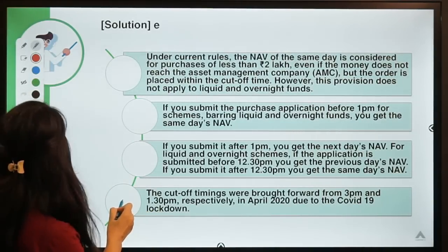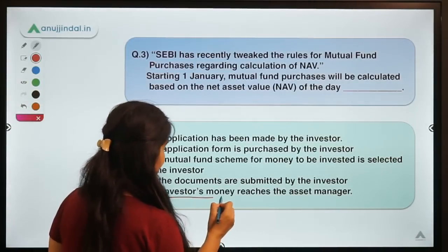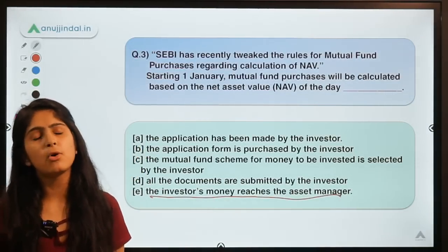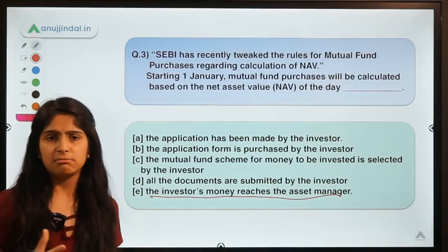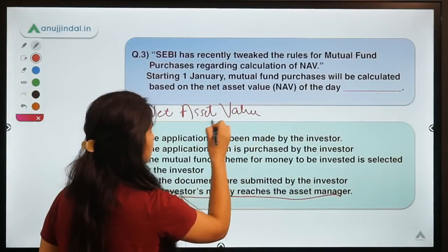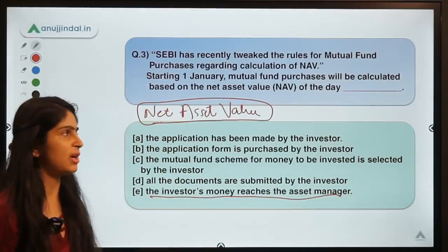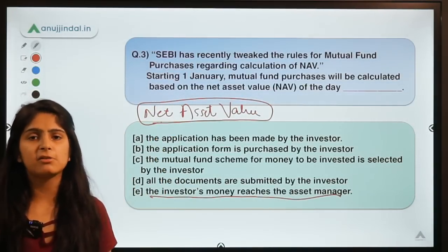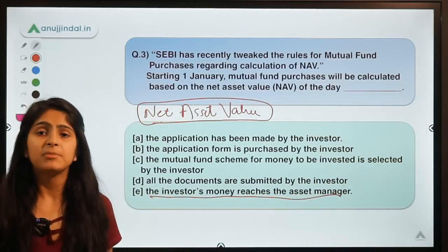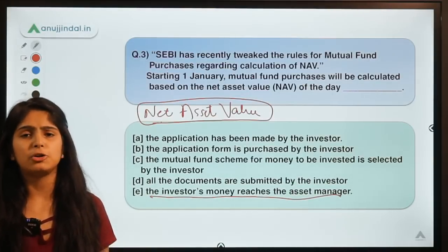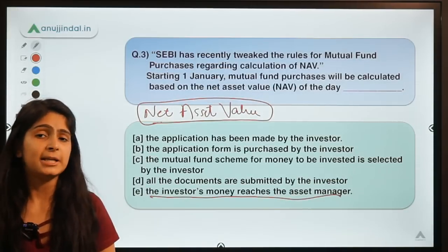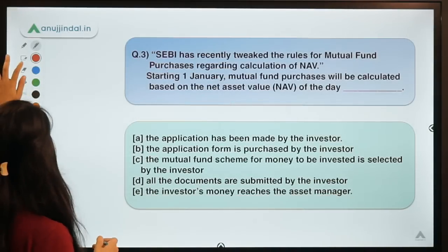The correct answer is option E — it would be calculated on the day the investor's money reaches the asset manager. Whenever an investor wants to invest in a mutual fund scheme, NAV or Net Asset Value is one of the driving factors. An investor checks the NAV on a particular day, decides to invest, fills out the formalities, and makes a payment according to the scheme chosen.